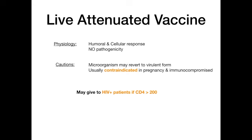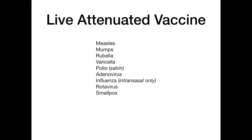The highest yield part of this video is knowing the examples of vaccines that correspond to each category. For live attenuated vaccines, the examples are: measles, mumps, rubella, varicella, polio (specifically the Sabin polio vaccine), adenovirus, influenza/flu vaccine (but only the intranasal version), rotavirus, and smallpox.